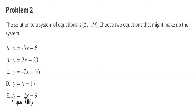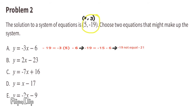Problem number 2: The solution to a system of equations is the ordered pair (5, -19). Choose two equations that might make up the system. The 5 is the x value and the negative 19 is the y value. Substituting y with negative 19 and x with 5 into option A: negative 19 equals negative 3 times 5 minus 6, or negative 19 equals negative 15 minus 6. Negative 19 does not equal negative 21, so this equation does not make up the system.